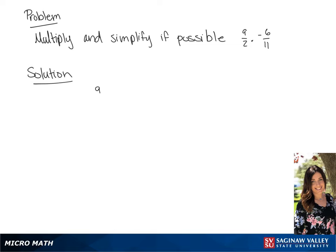Our problem is 9 over 2 times negative 6 over 11. We are going to simplify first.